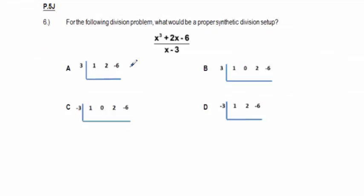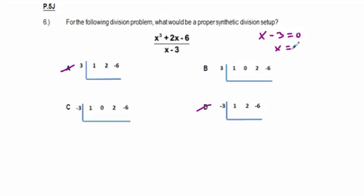Problem 6: for the following division problem, what would be a proper synthetic division setup? We must include all placeholders, so we need x³ + 0x² + 2x - 6, requiring that zero placeholder. Answers D and A don't have that. Then we need the correct divisor value: since x - 3 = 0, x = 3 goes on the outside. Answer B is our correct answer.